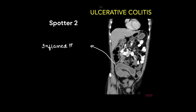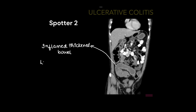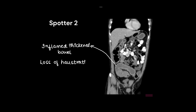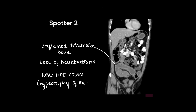This is ulcerative colitis on CT. We can see the inflamed, thickened bowel wall, and there is loss of haustrations, which gives rise to lead pipe colon. This mainly happens because of hypertrophy of the muscularis mucosae.